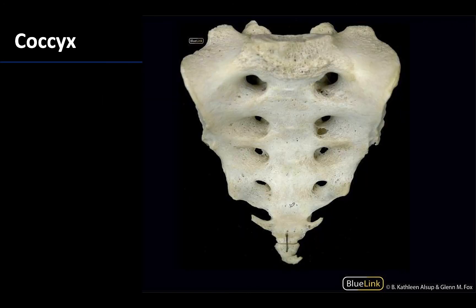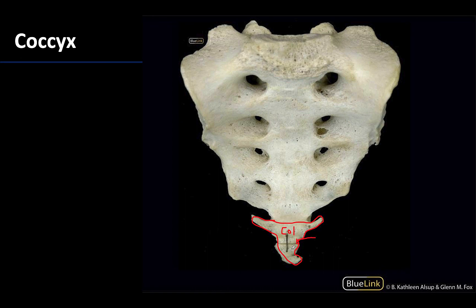Last but not least, the coccyx — generally four fused vertebrae that are very rudimentary. The first coccygeal vertebra is the most distinct but certainly not as distinct as those in the sacrum or movable vertebrae. Often this first coccygeal vertebra is not completely fused to the smaller, more inferior ones, which get smaller and smaller. They don't play a big role in weight bearing, but ligaments and muscles do attach to the coccyx.